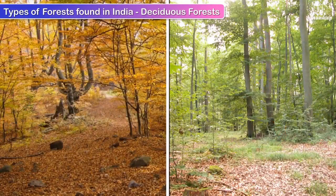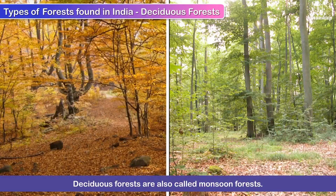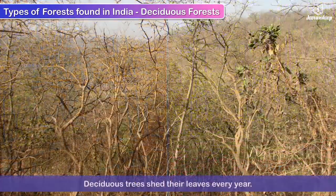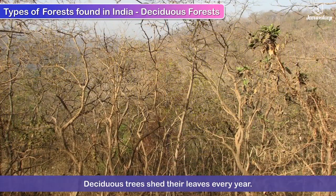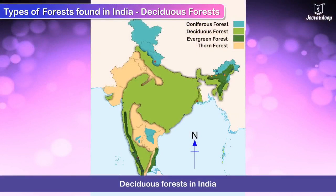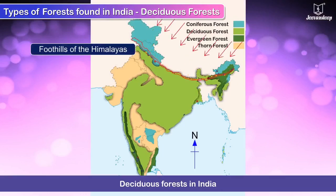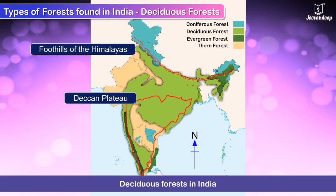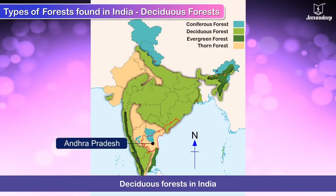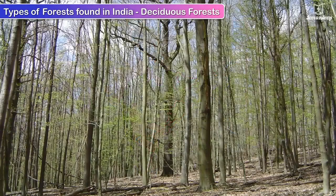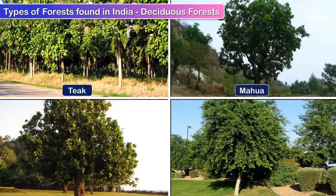Deciduous forests are also called monsoon forests. Deciduous trees shed their leaves every year. In India, deciduous forests are found in the foothills of the Himalayas, the Deccan Plateau, as well as in states like Andhra Pradesh, Odisha and Bihar. The main trees in these forests are Teak, Mahua, Sal and Shisham.